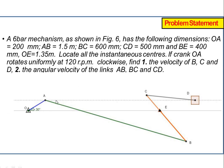The crank is connected by link AB to the BC link, which is fixed about point E. At point D there is a slider. Link number 1 is fixed; link 2 is OA, link 3 is AB, link 4 is BC, link 5 is CD, and link 6 is the slider.